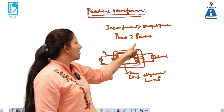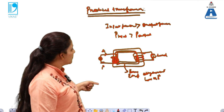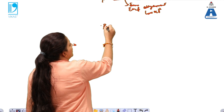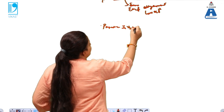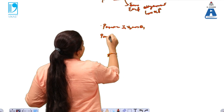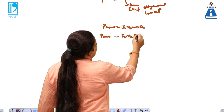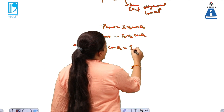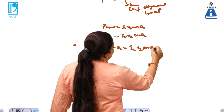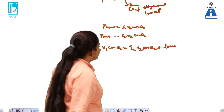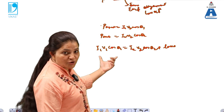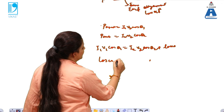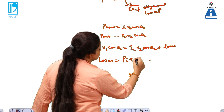When there is loss in the current, the output power becomes smaller than the input power. In the case of a practical transformer, the input power is given by I1 V1 cos theta 1, and the output is given by I2 V2 cos theta 2. So the input equals the output plus some losses.